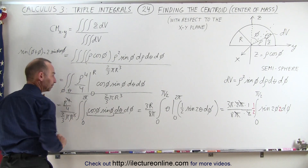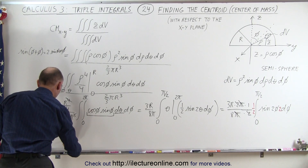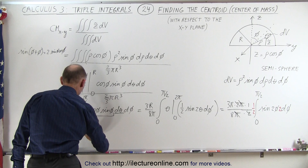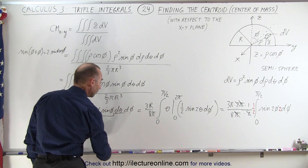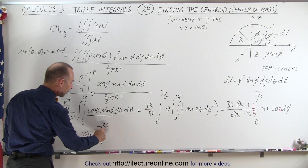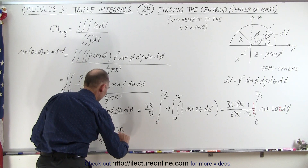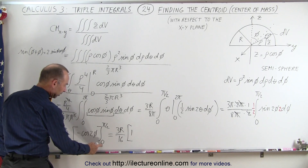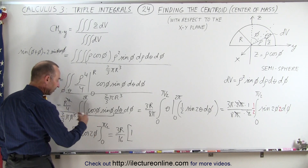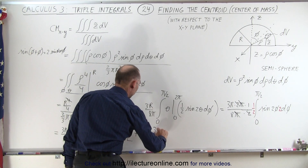This becomes three r divided by 16. When we integrate sine of two phi we get negative cosine of two phi, evaluated from zero to pi over two. Plugging in the upper limit: two times pi over two is pi, and cosine of pi is negative one; times the negative sign gives positive one. Plugging in the lower limit: cosine of zero is one, but subtracting it gives plus one. So we get two times three r over 16, which equals three r over eight.